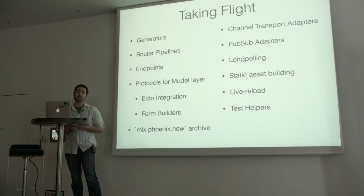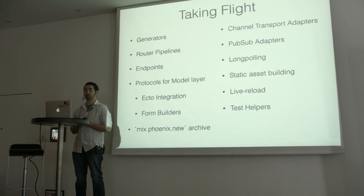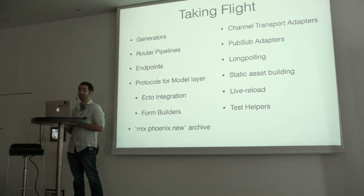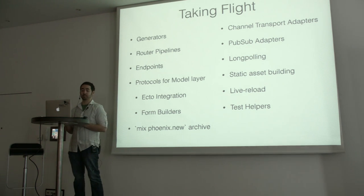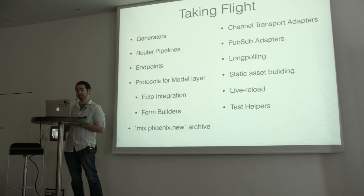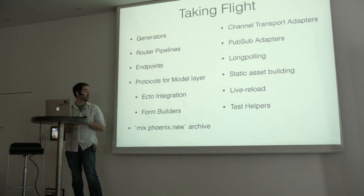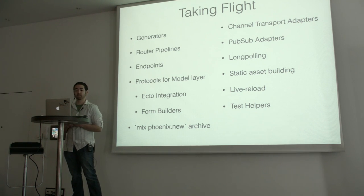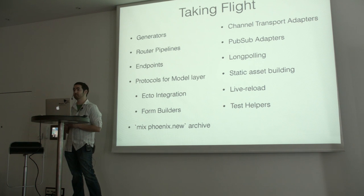We have generators for getting started quickly. We have router pipelines to group your middleware — a nice separation of concerns. We have this concept of endpoints. I'll talk about how I designed this monolithic system, and then Jose came in and said all these things are global and we need to make them not global. I'll talk about how endpoints come out of that and things I've learned coming into the OTP mindset. We added a protocol layer for modeling — Ecto integration by default, but it's just protocol-driven, so if you want to bring your own model layer it's just about 50 lines of code. You implement a couple of protocols and all your forms and links just work. Form builders are in with that. We now have a Phoenix new task through a mix archive, so it's easier than ever to get started.